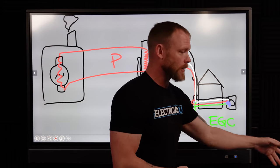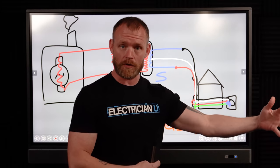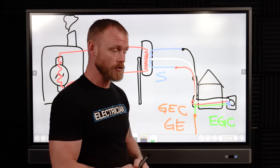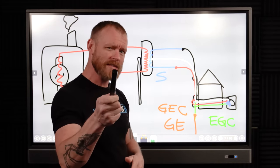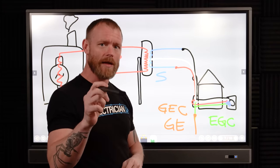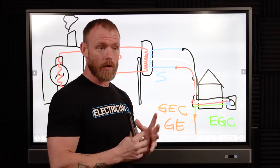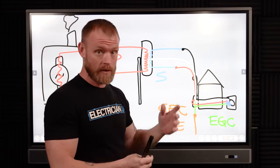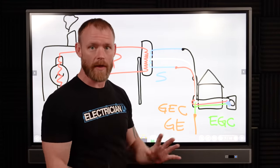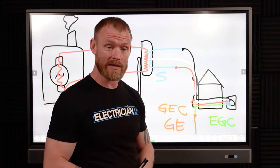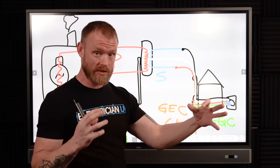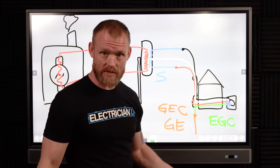The equipment grounding conductor — EGC — is a different thing. It goes out to equipment and has a different function. The grounding electrode establishes conductivity with earth for line surges, lightning, or anything that might happen — maintaining similar potential throughout the system. The EGC provides a fault path; if there's a fault on a piece of equipment, it can actually clear the fault and make a breaker trip. I'll have more videos specifically on grounding and bonding — it's a very complex topic.